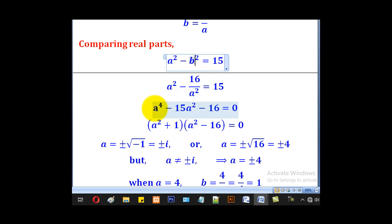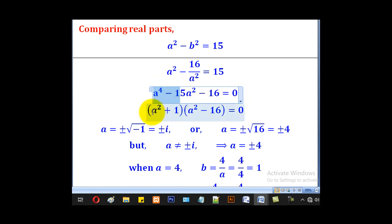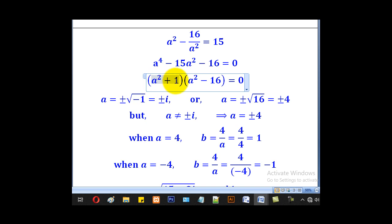Then we multiply through by A squared. We shall come up with A to the power 4 minus 15A squared minus 16 equal to 0. For A squared plus 1, we shall come up with A as plus or minus the square root of negative 1, which is plus or minus i. And for this, we shall come up with A as plus or minus 4.